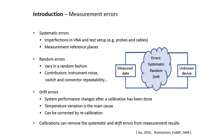There are three types of measurement errors. When you measure a device and you get the data, there are three types of errors associated with them. The systematic error — that's, for example, imperfection in the waveguide, and the test setup due to probes and cables, and also measurement reference planes, which may not be at the place where you want them to be.